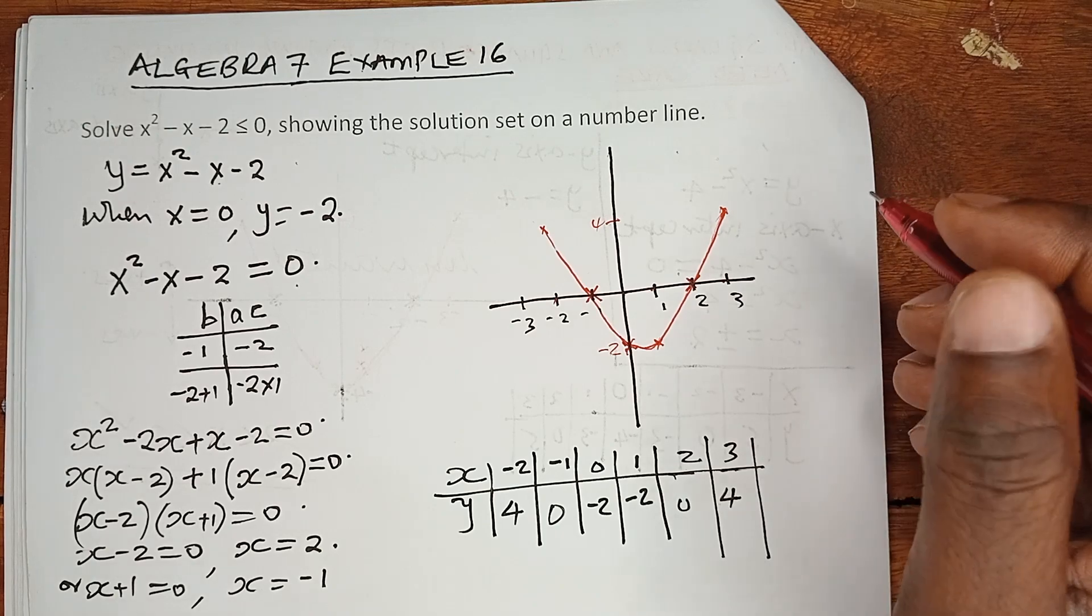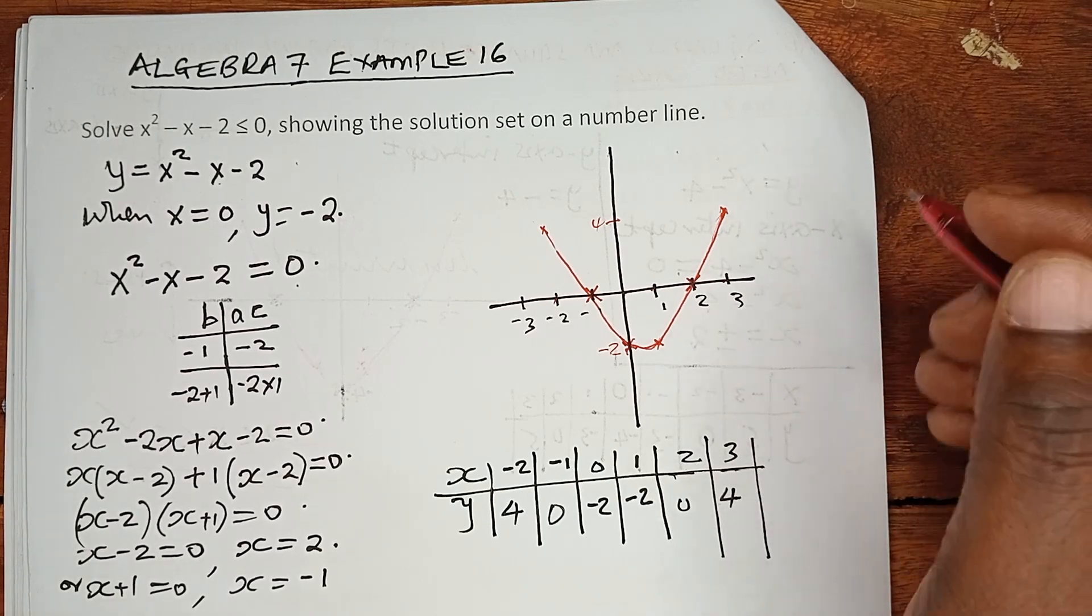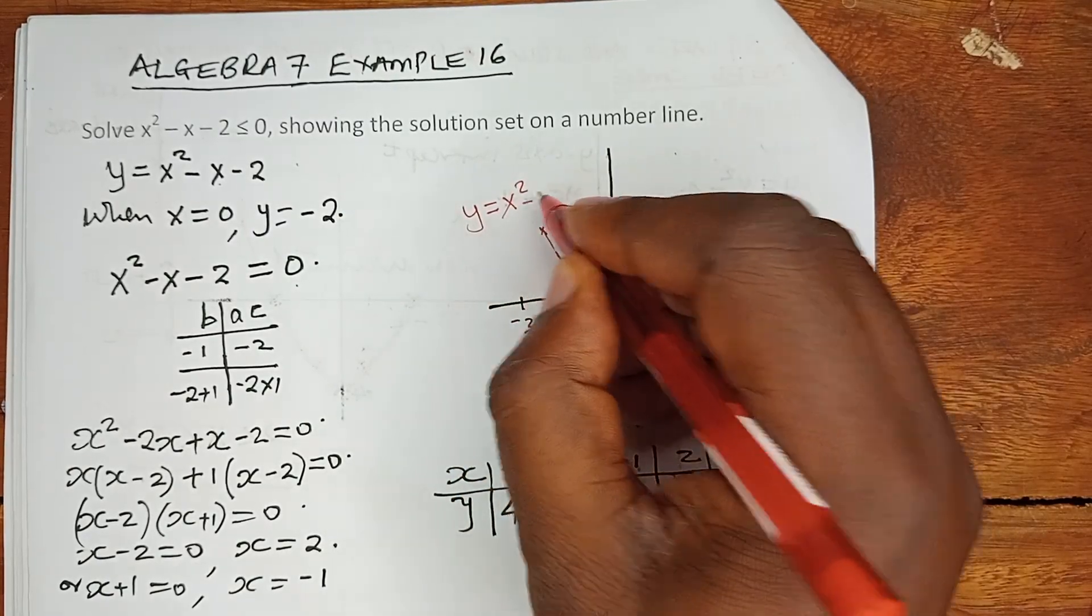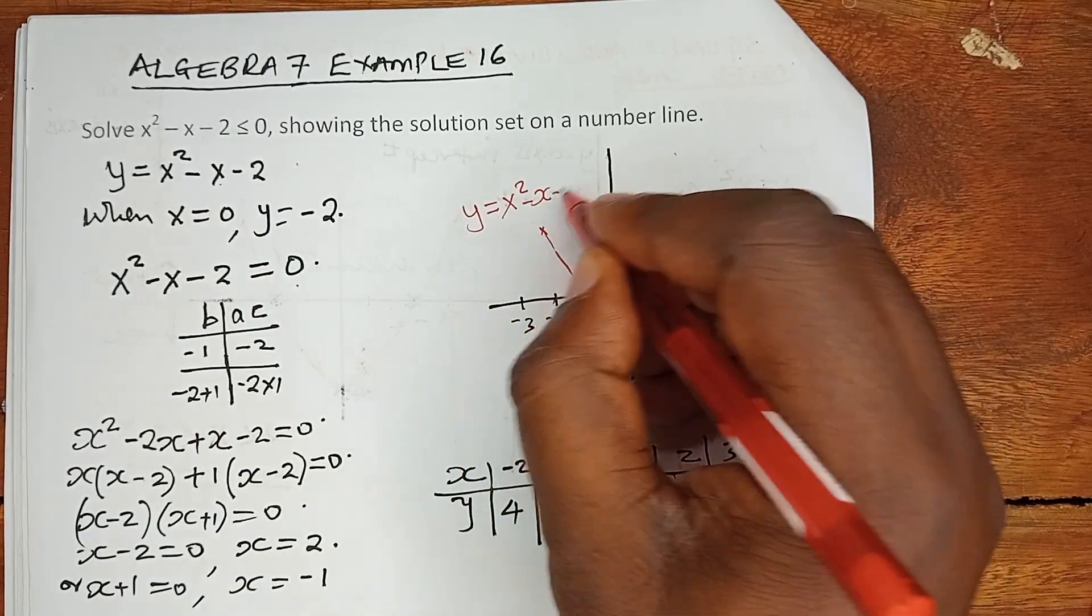It is actually the boundary. Anytime you plot a graph, please remember to name it. The name of this graph is y equals x squared minus x minus 2.